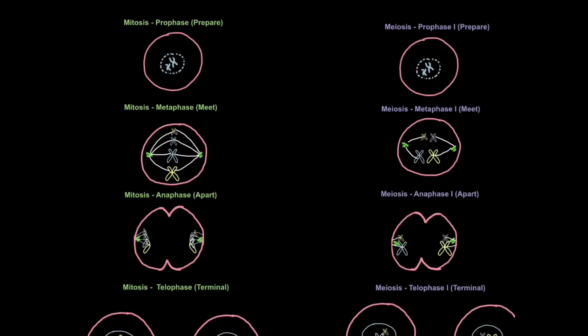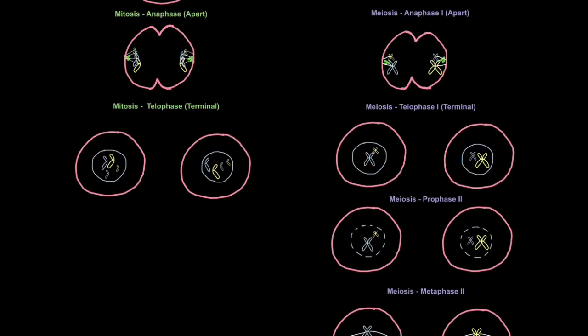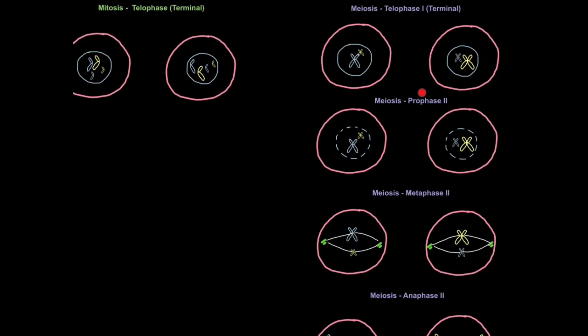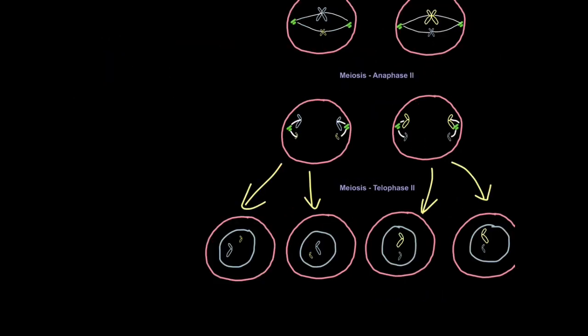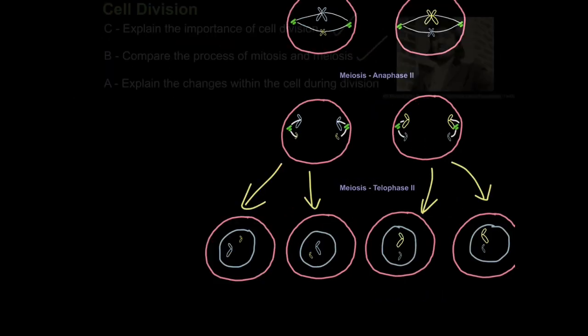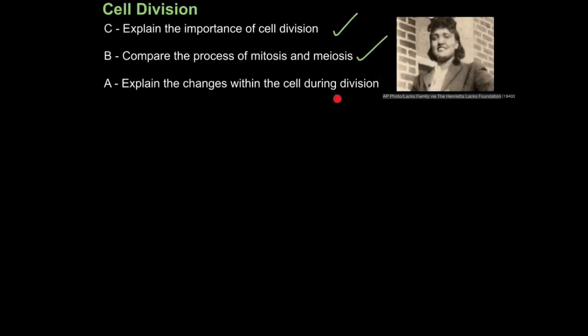So when you compare them next to each other, you can see the differences become more apparent. Start off in the same way, but here in metaphase, they line up single file in mitosis, double file in meiosis. In anaphase 1, the sister chromatids move to either pole, but the entire chromosome moves to either pole in meiosis. Telophase is where mitosis ends, but telophase 1 is just the end of one cycle in meiosis. Then meiosis sort of copies what mitosis does. The chromosomes line up in single file during metaphase 2. Then each cell will divide to produce 4 genetically unique gametes. And that's how you explain the changes within the cell during division.